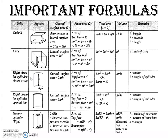Right circular cylinder, closed at top: curved surface area is 2πRH, where π is 22/7 or 3.14. Total area is 2πR(R + H). For a right circular cylinder open at top and hollow cylinder — that is a pipe — curved surface area is 2πRH and total area is 2π(R² − r²).